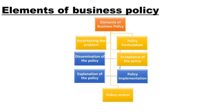The elements of business policy include: first, ascertaining the problem; then formulating the policy to cure that problem; followed by dissemination of policy — telling everybody about it; acceptance of policy by the organization; then explaining the policy comprehensively; implementing the policy; and finally a feedback or follow-up, which is called policy control — using appraisal or feedback processes.